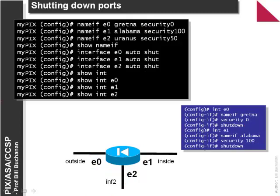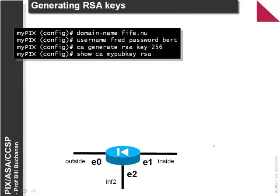For shutting down ports in PIX 6 we use 'auto' followed by 'shut', whereas in PIX 7 ASA we can use the 'shut' command directly to shut down ports.